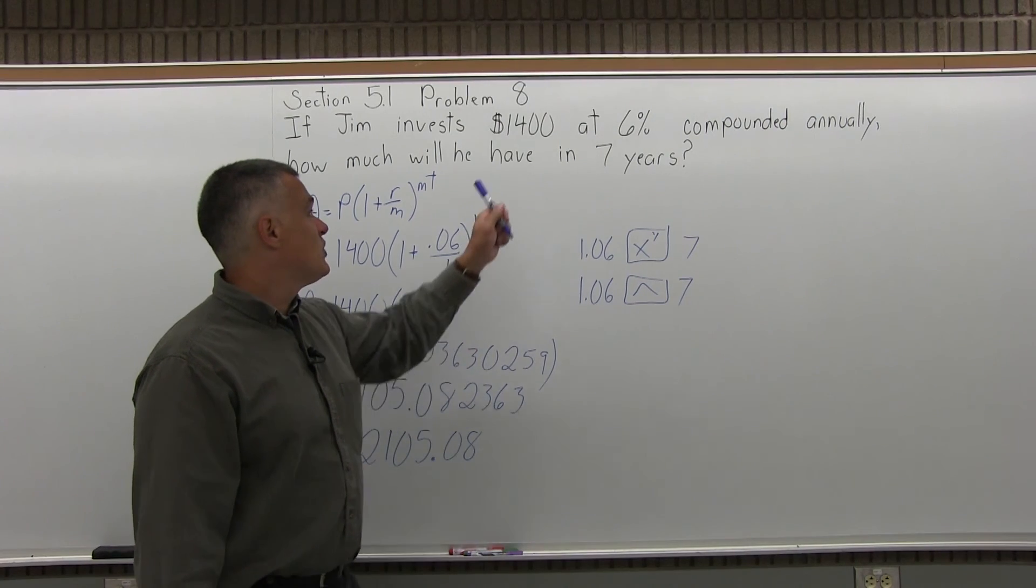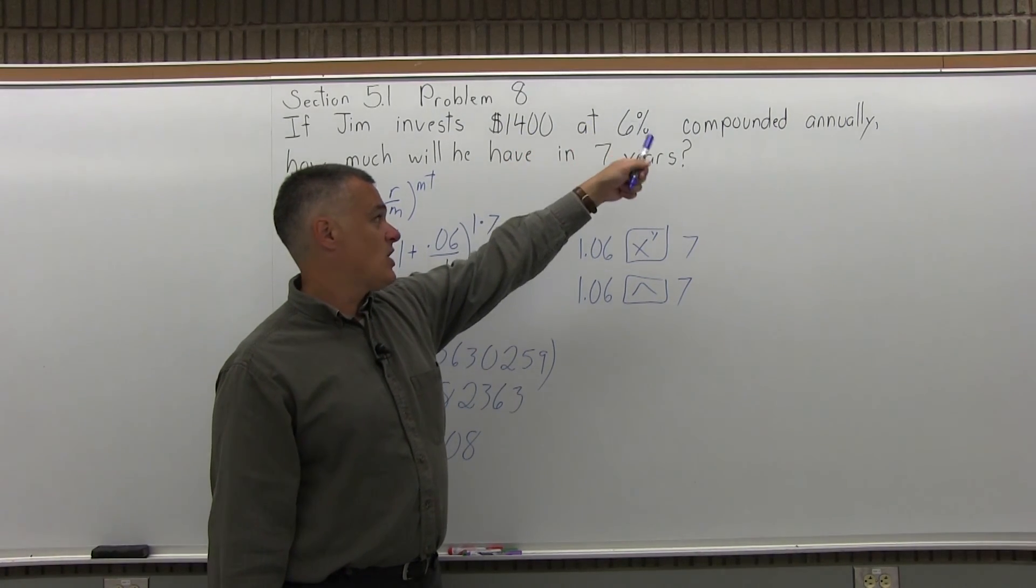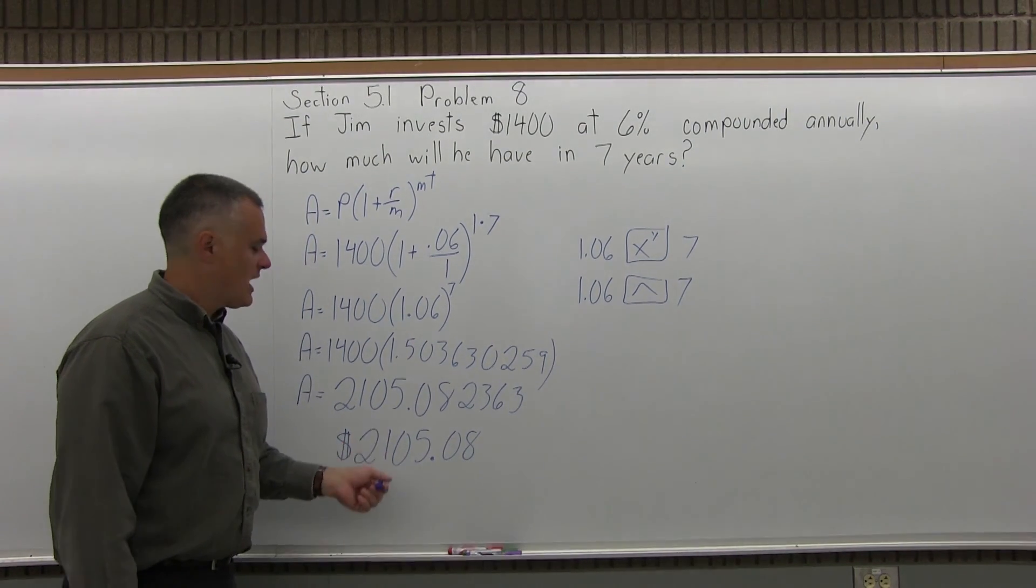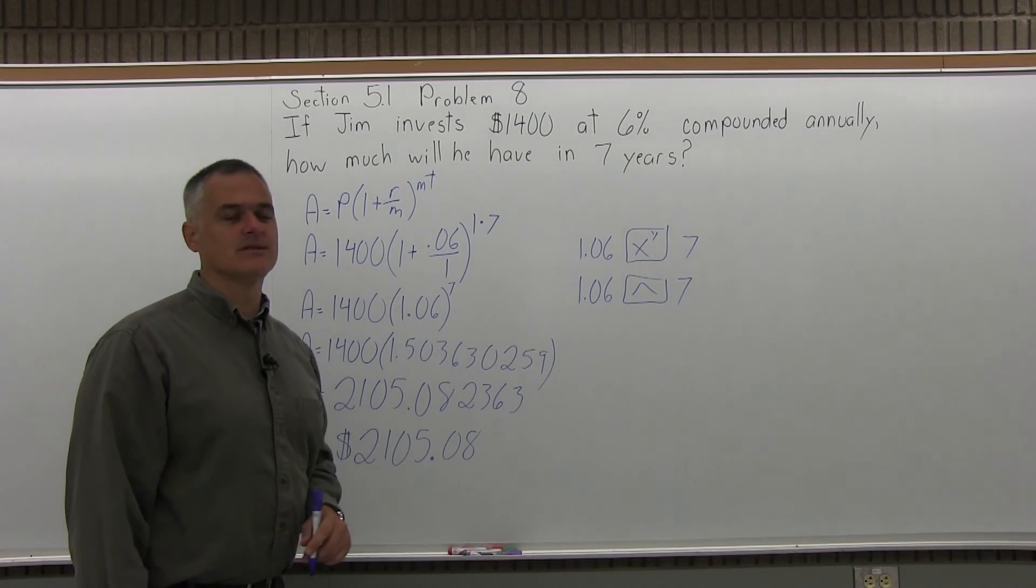So if this person, Jim, invests $1,400 now at 6% compounded annually, after seven years, the amount of money he'll have is $2,105.08, and that makes sense.